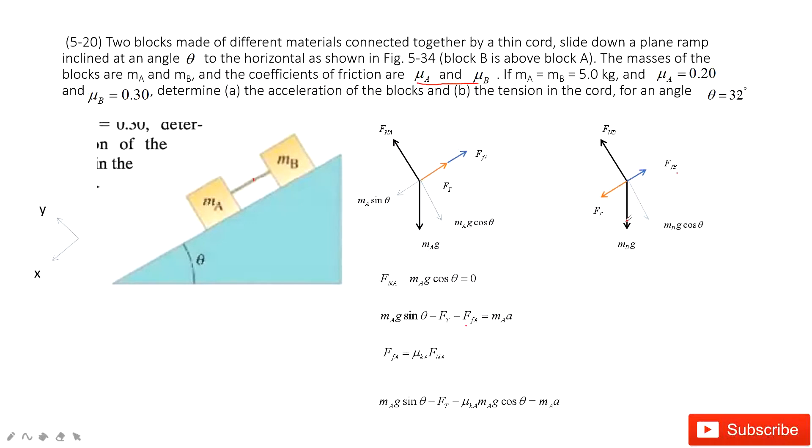Now we write Newton's second law. First, we look at Y component. We have FnB minus Mb cosine theta equals zero. Then we look at X component. We have the gravity Mb sine theta plus the tension minus the friction equals mass times acceleration. Acceleration is the same. The friction is another coefficient, mu Kb times the normal force. We input the normal force in this equation.